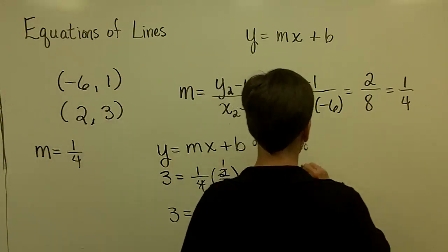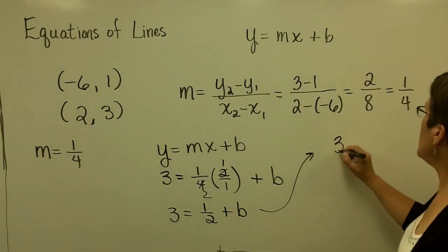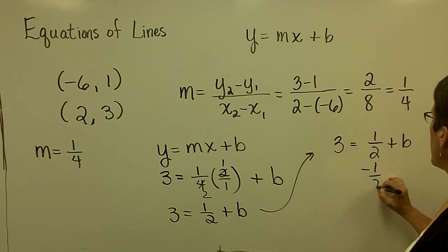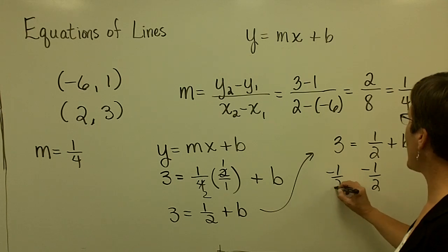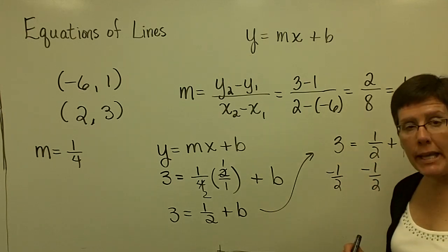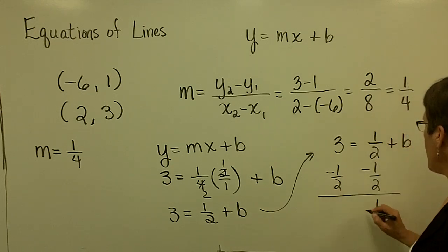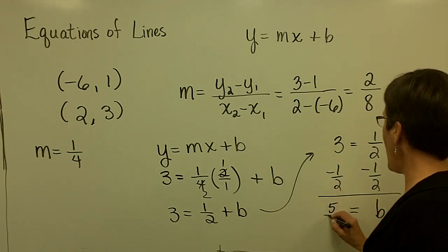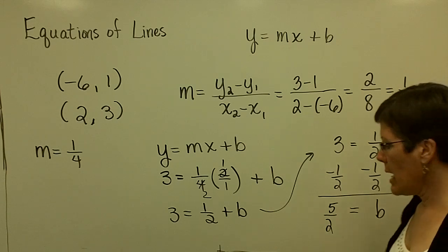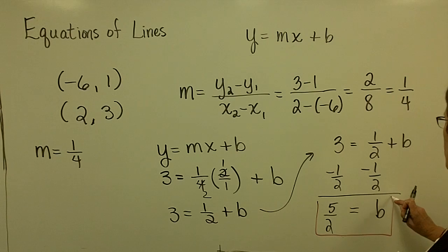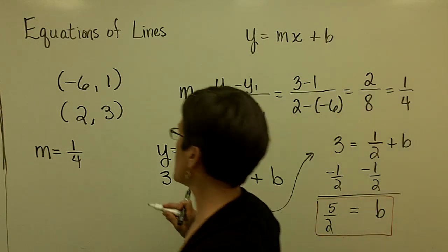So I have 3 equals 1 half plus b. I'm going to bring this over here. So 3 equals 1 half plus b. And to solve for b, I'm going to subtract 1 half from both sides. 3 minus 1 half is 2 and a half. And 2 and a half is the same thing as 5 halves. And I now finally, after all of this work, have a b value that I can put into this equation.